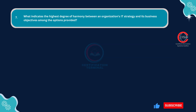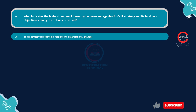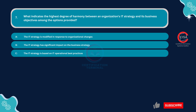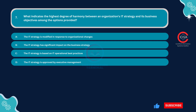Question number seven: What indicates the highest degree of harmony between an organization's IT strategy and its business objectives among the options provided? Option A: The IT strategy is modified in response to organizational changes. Option B: The IT strategy has significant impact on the business strategy. Option C: The IT strategy is based on IT operational best practices. Option D: The IT strategy is approved by executive management.